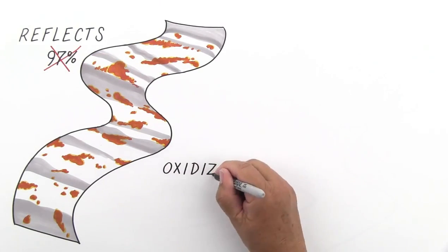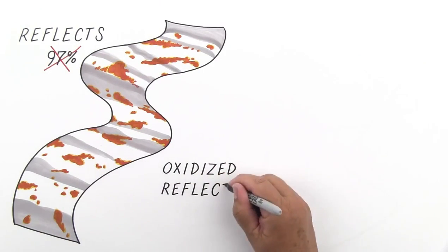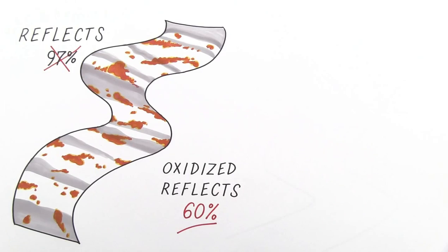Oxidized aluminum has a much higher emissivity of up to 0.4, reflecting a mere 60% of the radiant heat.